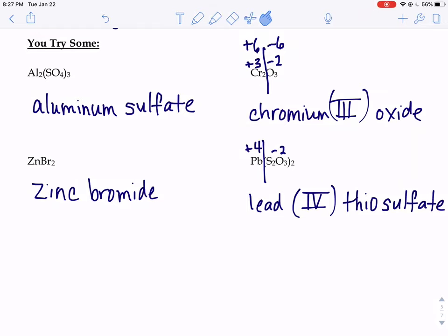Here's some of the answers to the you try some naming ionic compounds. So when you're naming ionic compounds, you just name the ions involved. When you look at that first example of Al2(SO4)3, the first thing you do is write down the name for Al. That's aluminum.